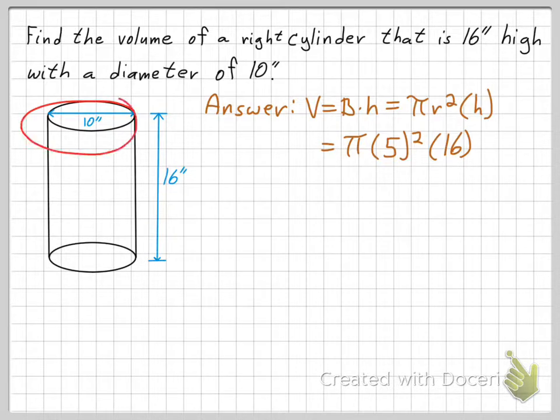Well, if the diameter is 10, then the radius is going to be half that, so the radius is going to be 5 inches. And that's why we have a radius of 5 inches, that's where we get that from.